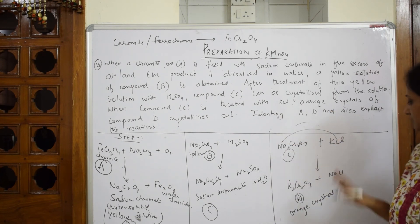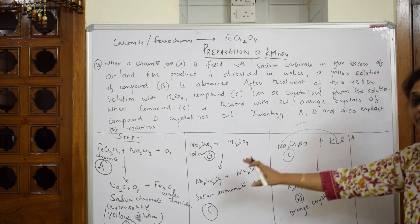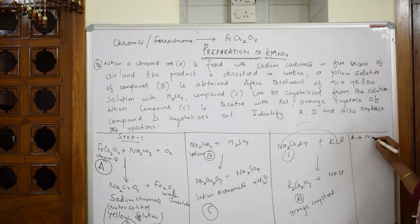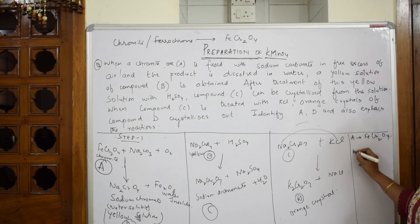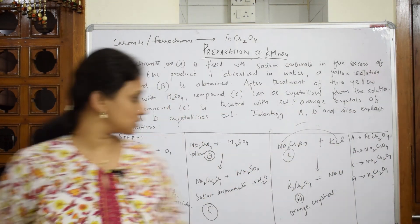Identify A, B, C, D and also explain. This is your whole concept. Let us summarize and write. What is compound A? After writing everything, you are going to write it like this. Compound A is ferrochrome, FeCr2O4. What is compound B? Compound B is Na2CrO4. What is compound C? Na2Cr2O7. What is compound D? Compound D is K2Cr2O7. That's it. This is how you are going to solve the whole equation.